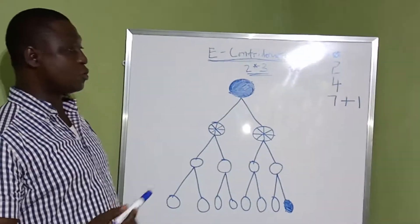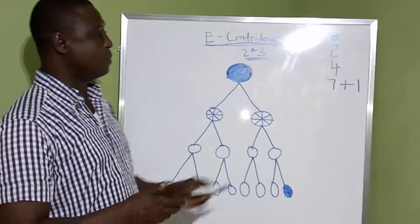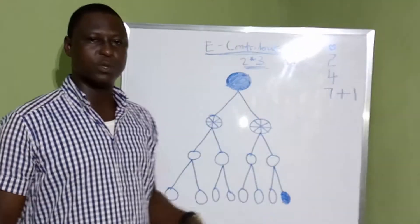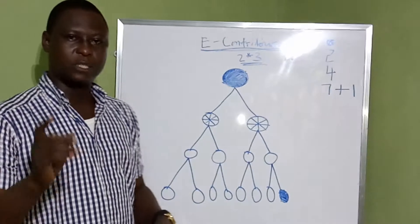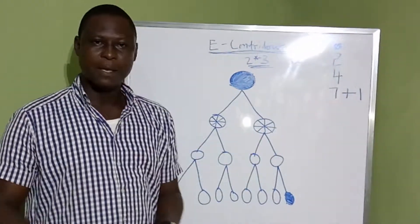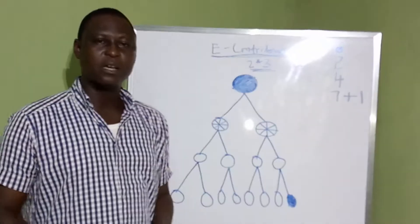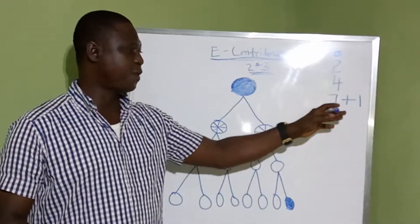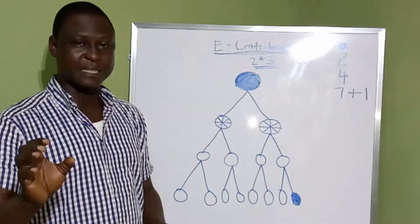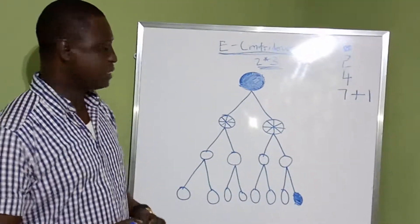It's a 2 by 3 matrix. What does 2 by 3 matrix mean? It simply means you have 2 under you directly. Those 2 will be having 2 under them, making 4. And those 4 will be having 2 under them, making 8. But in this system you only need 7 on your last floor. The last one will be taken care of by the system itself.